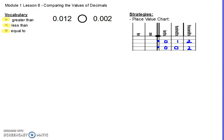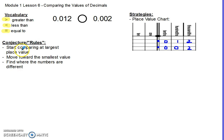We follow our rules for comparing decimals. The first rule is to start at the largest place value in your number. Here, the largest place value is tenths. Then we move toward the smallest place value — moving to the left toward our smaller amounts. We start at our largest place value and we have 0 and 0.